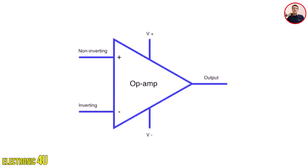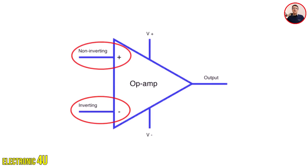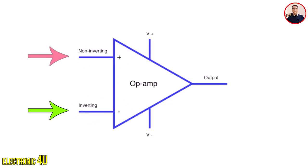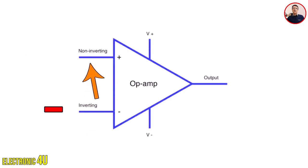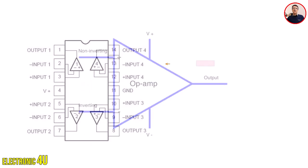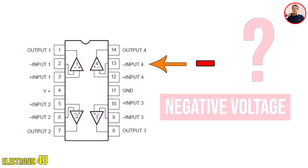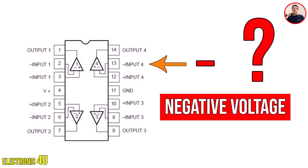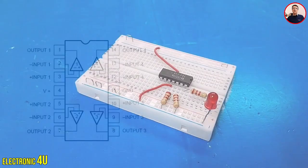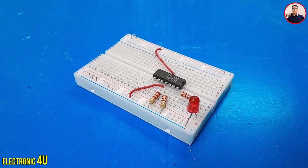Hi everyone. Have you ever wondered what the inverting and non-inverting inputs on op-amp ICs actually are, and what the difference is between them? Do we need to apply a negative voltage to the inverting input and a positive voltage to the non-inverting input? For example, on pin number 13, which has a negative sign, should we connect a negative voltage? In this video, we are going to practically examine this topic.